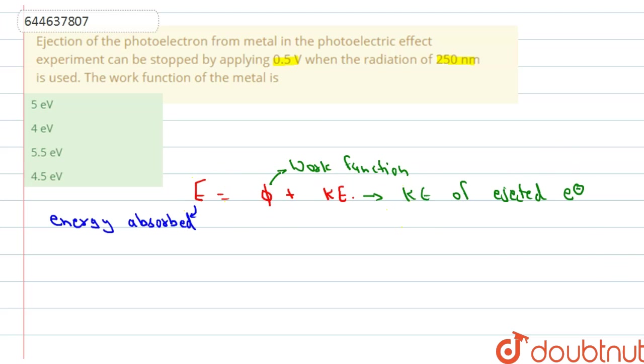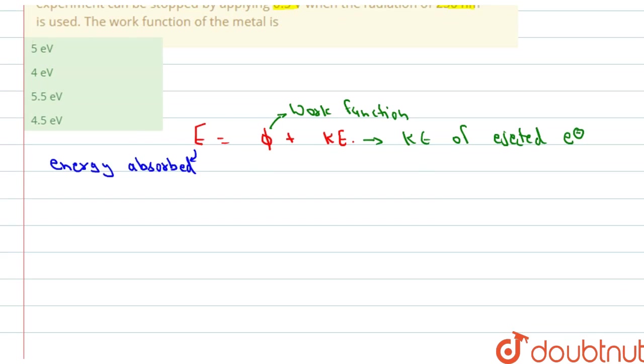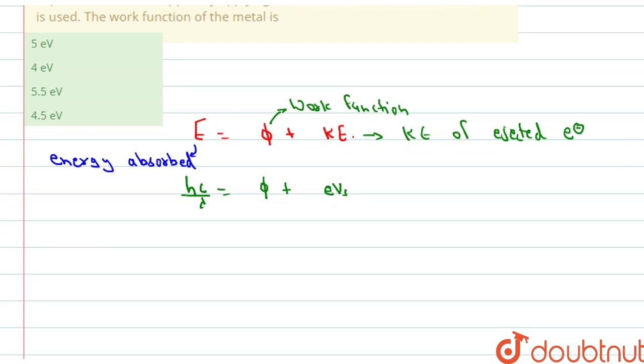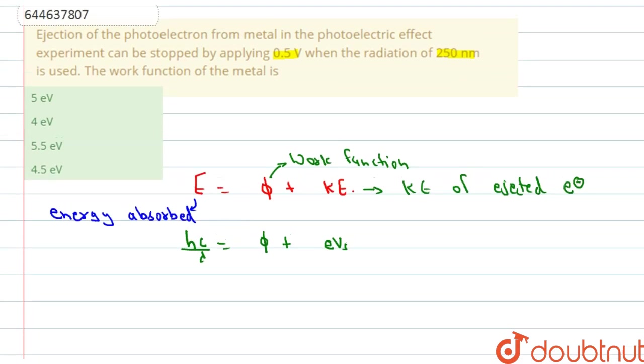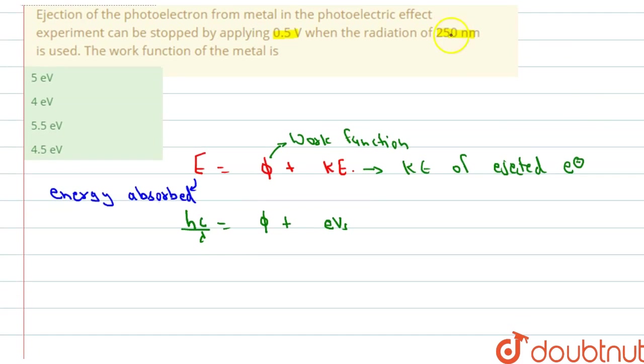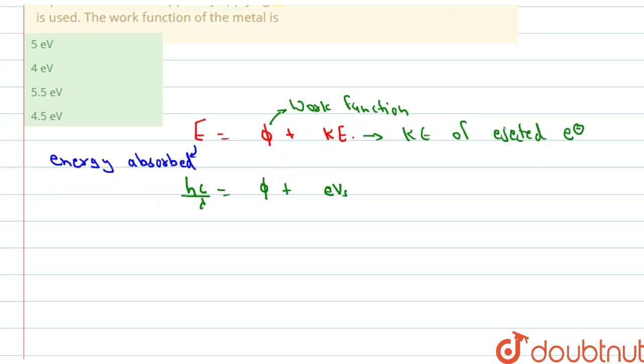Now let's start putting their value. E ejected electron equals Hc by lambda, Hc by lambda. Here Phi is just Phi plus kinetic energy is e Vs. This is the stopping potential. Vs is stopping potential. We will start putting this value. This is H is Planck constant, C is the speed of light and lambda is the wavelength. This is given, we have 250 nanometer.